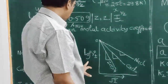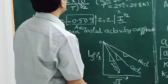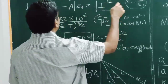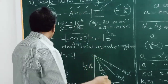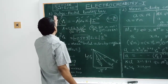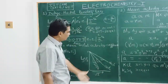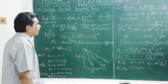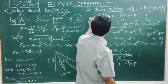We can calculate the mean activity coefficient if we know the ionic strength, the constant A, and the charges z₊ and z₋ for the electrolyte — using the Debye-Hückel limiting law. Several problems based on this have been asked in CSIR, GATE, and CET exams.